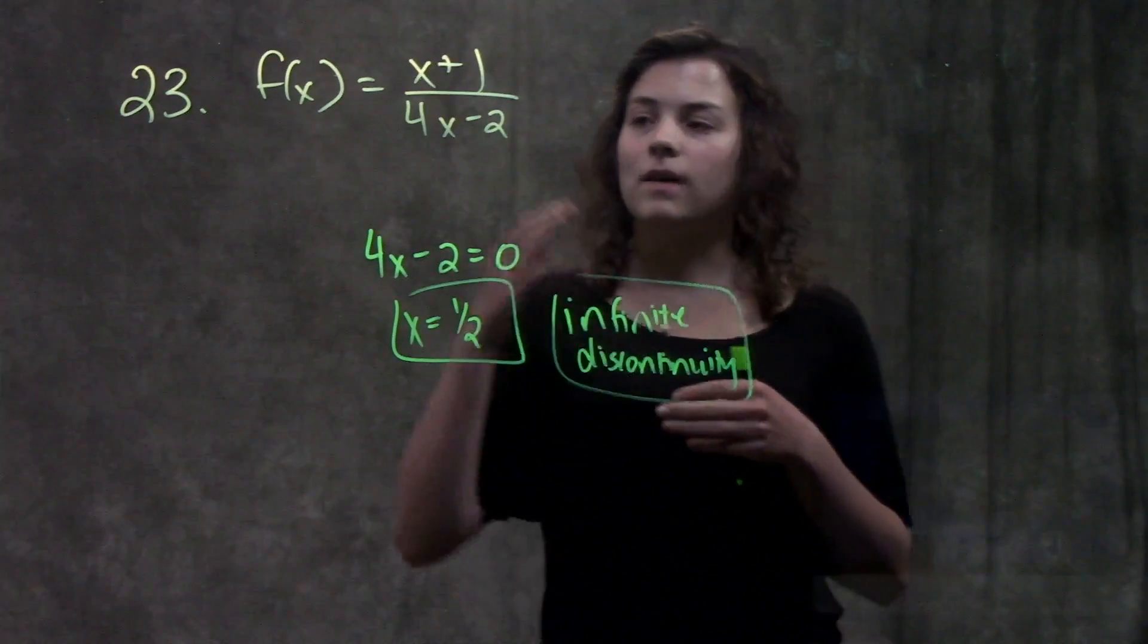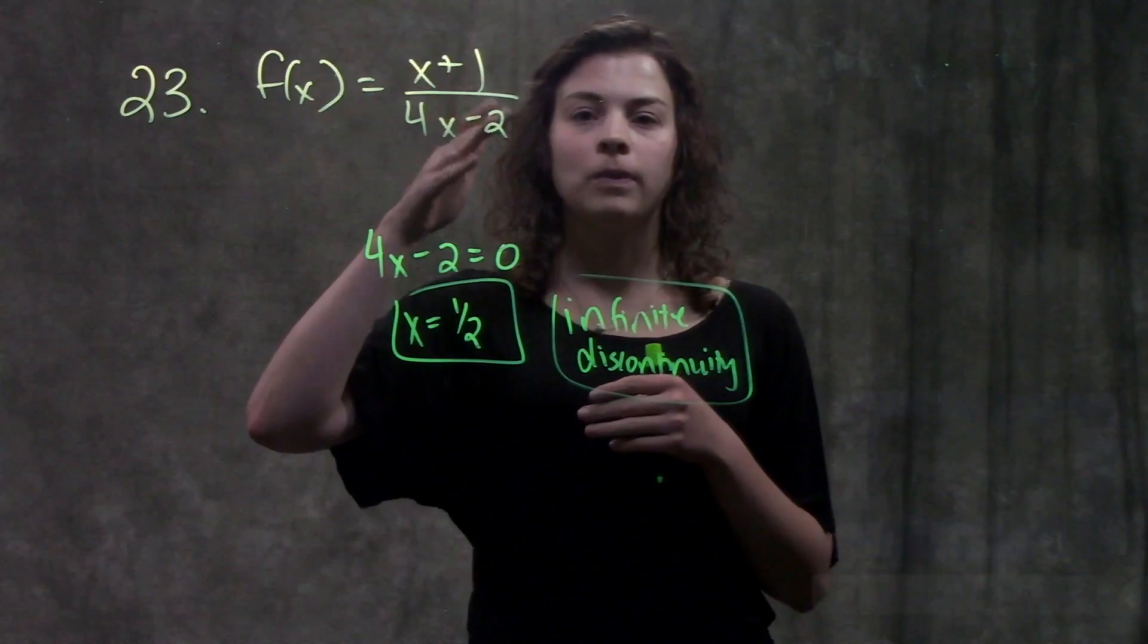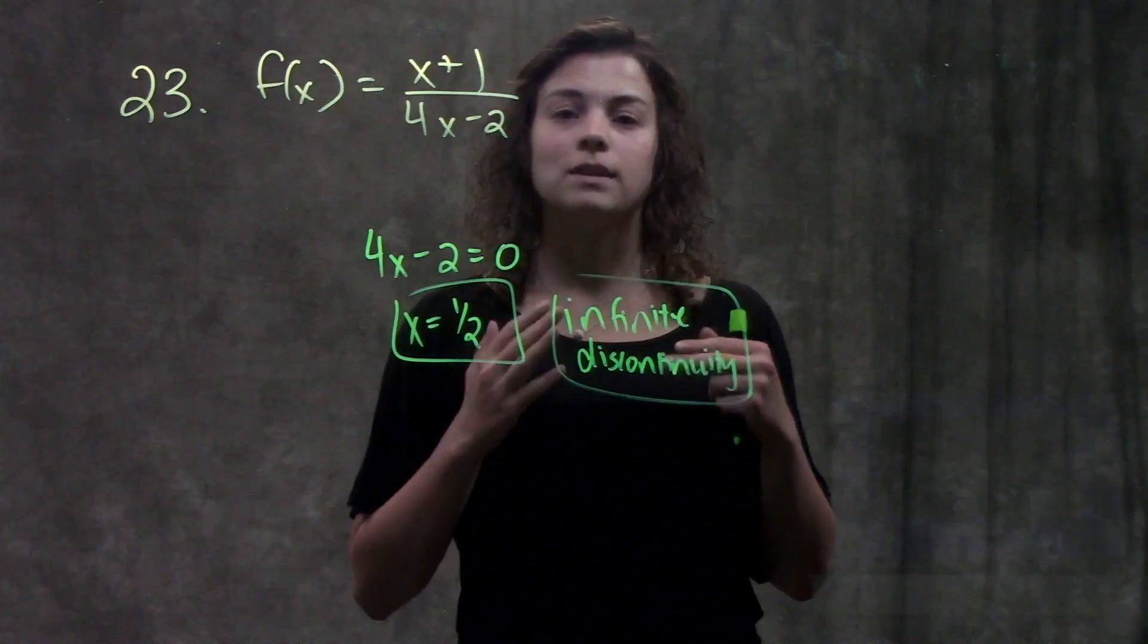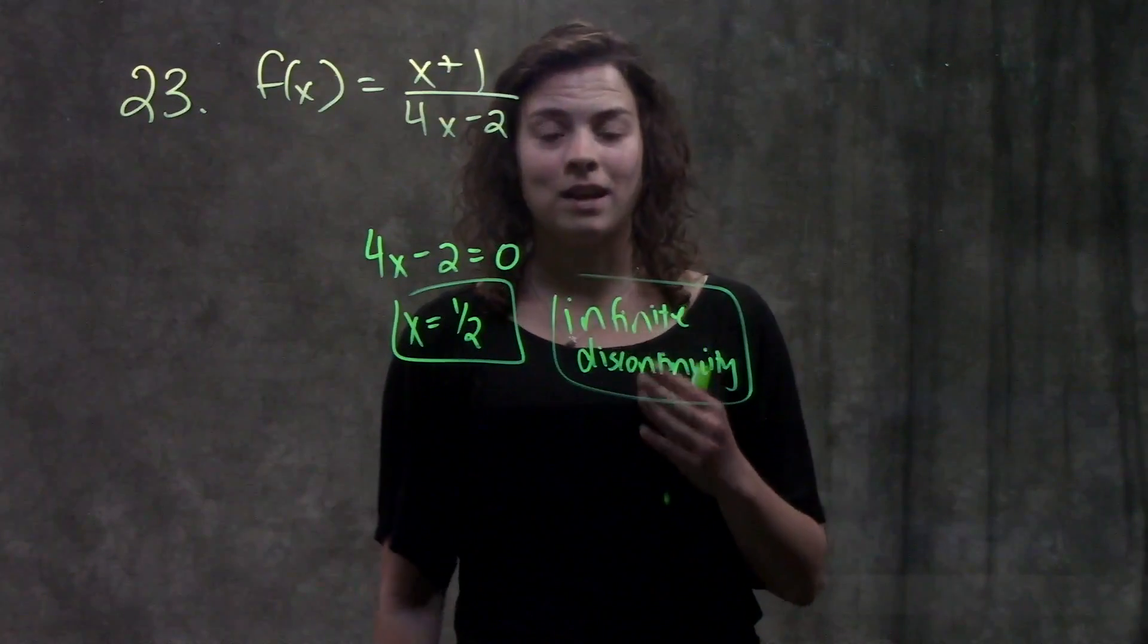As a really, really small decimal gets divided into some other number that's bigger than it, that really, really small number, for it to go into any other number, it's going to need to go into it an infinite number of times.